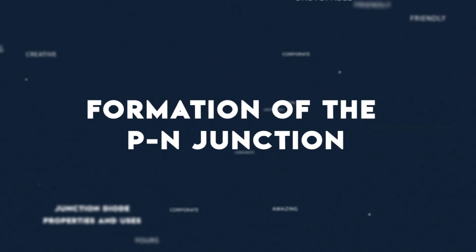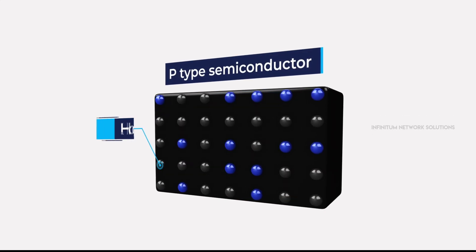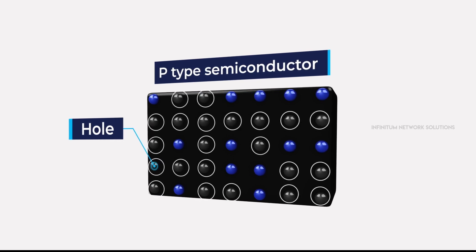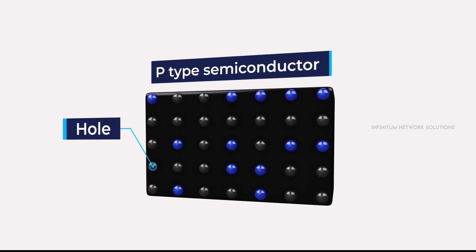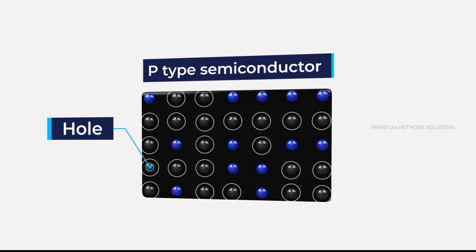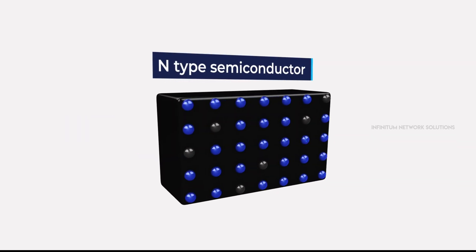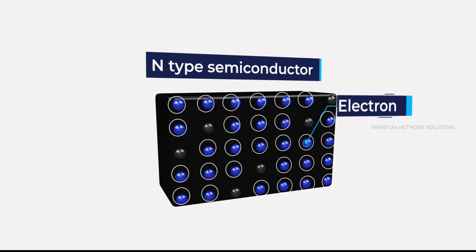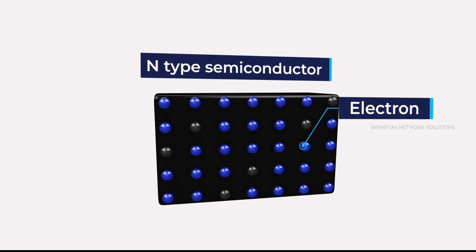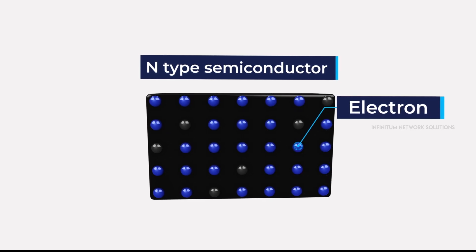Formation of the PN junction. The P-type semiconductor has an excess number of holes. Therefore, holes are the majority carriers of charge in P-type semiconductors, as shown. Similarly, N-type semiconductors have an excess number of electrons. Therefore, electrons are the majority carriers of charge in N-type semiconductors, as shown.